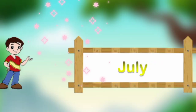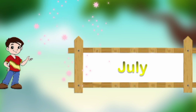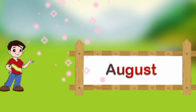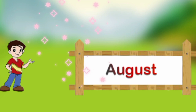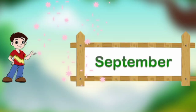July — spelling is J U L Y — July. August — spelling is A U G U S T — August. September — spelling is S E P T E M B E R — September.